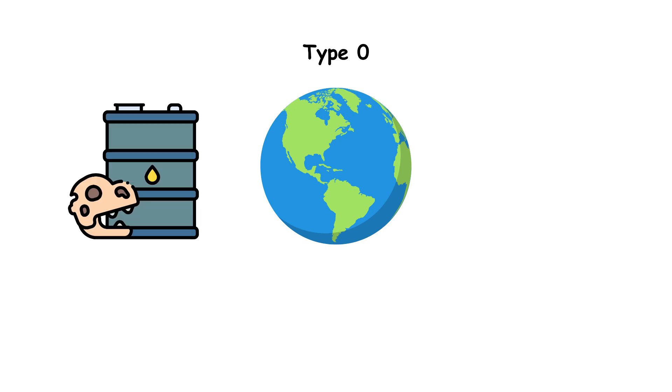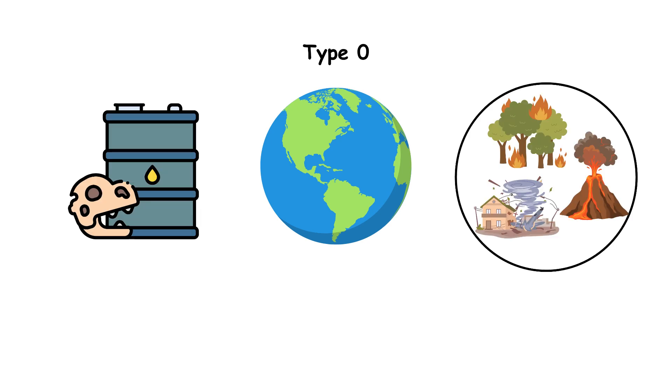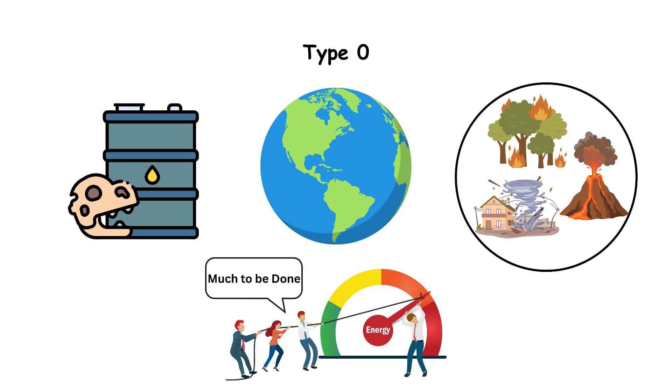Type 0 civilization is still dependent on Earth's limited resources. We rely on fossil fuels, face environmental crises, and haven't yet harnessed all of our planet's energy. However, progress is happening.